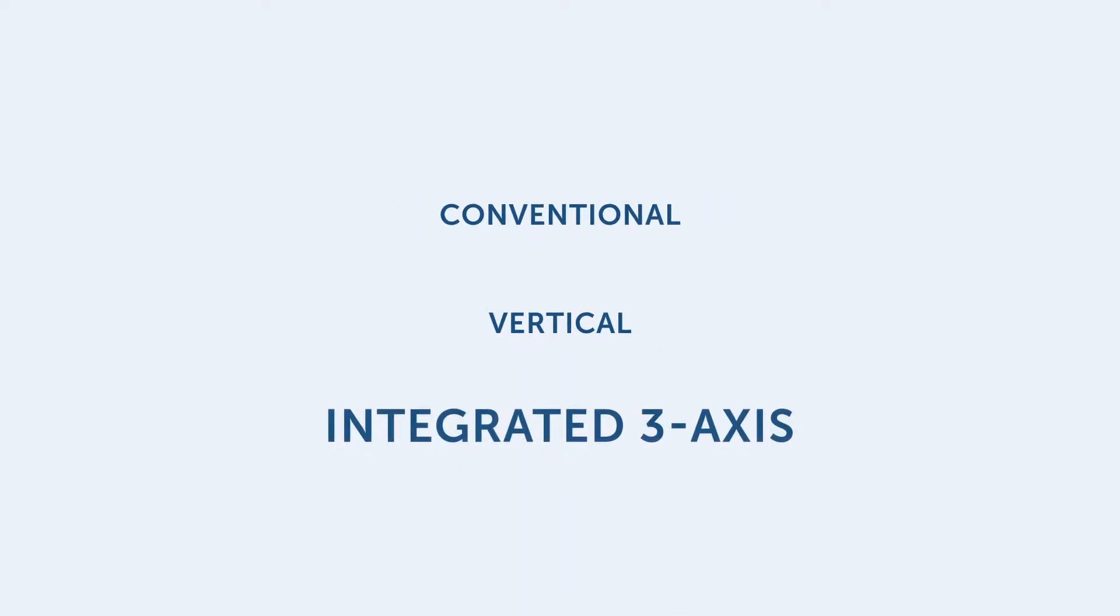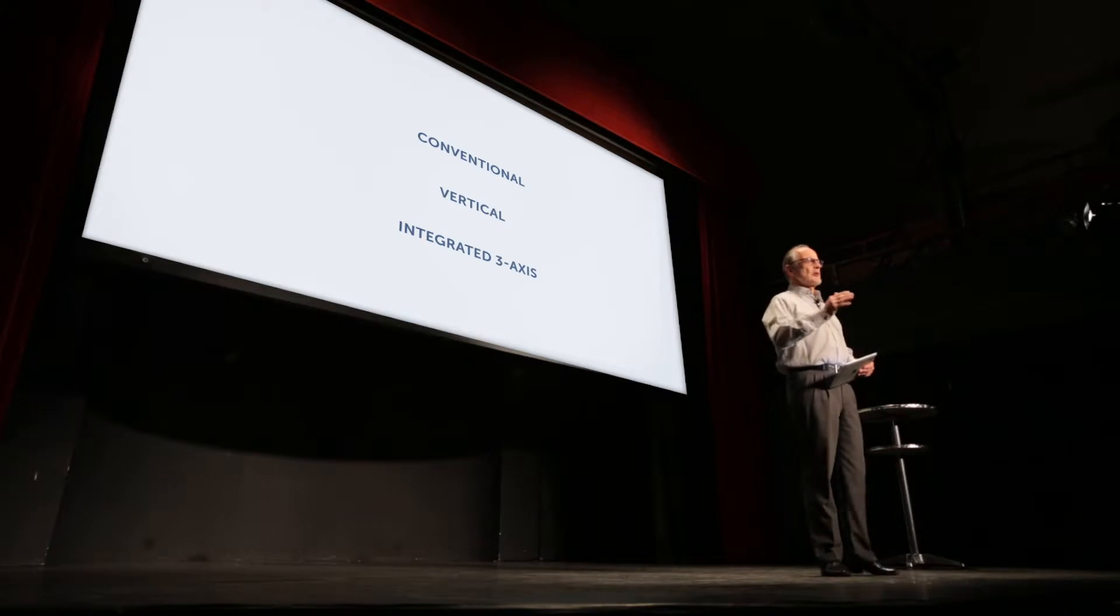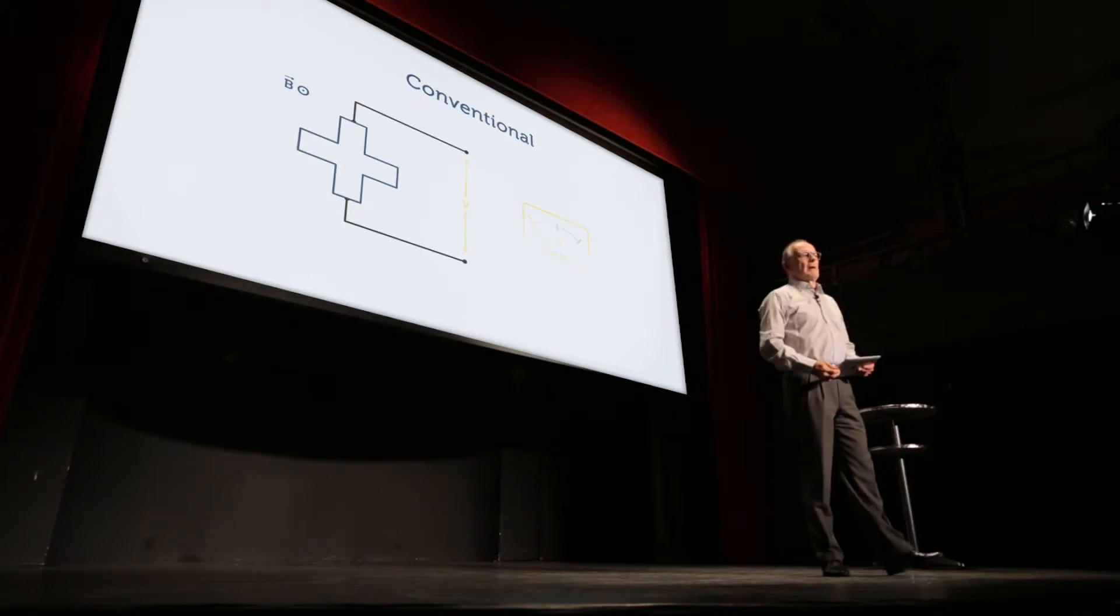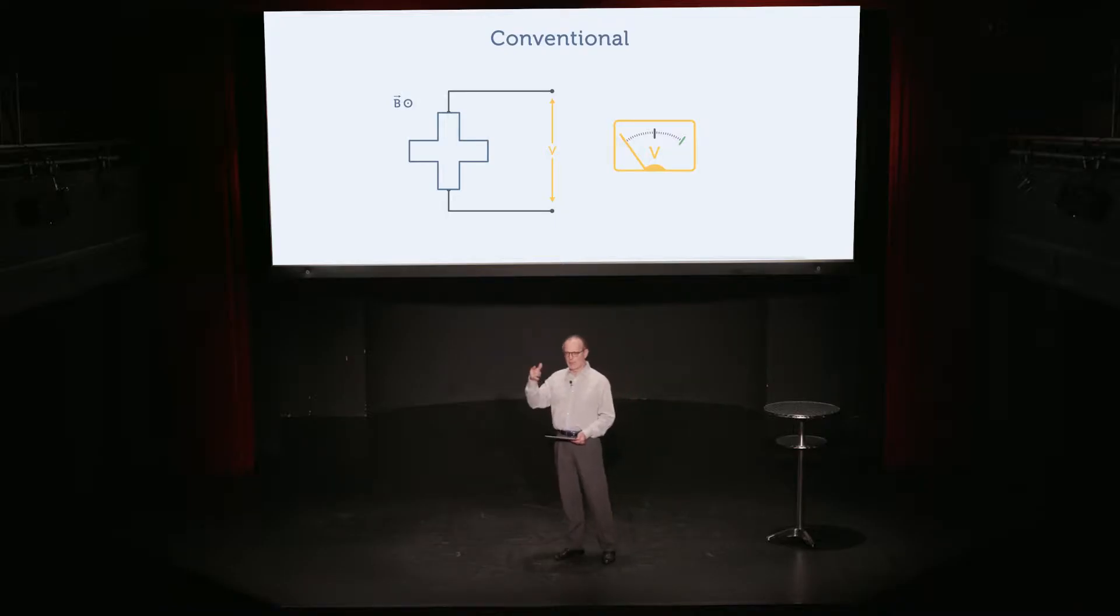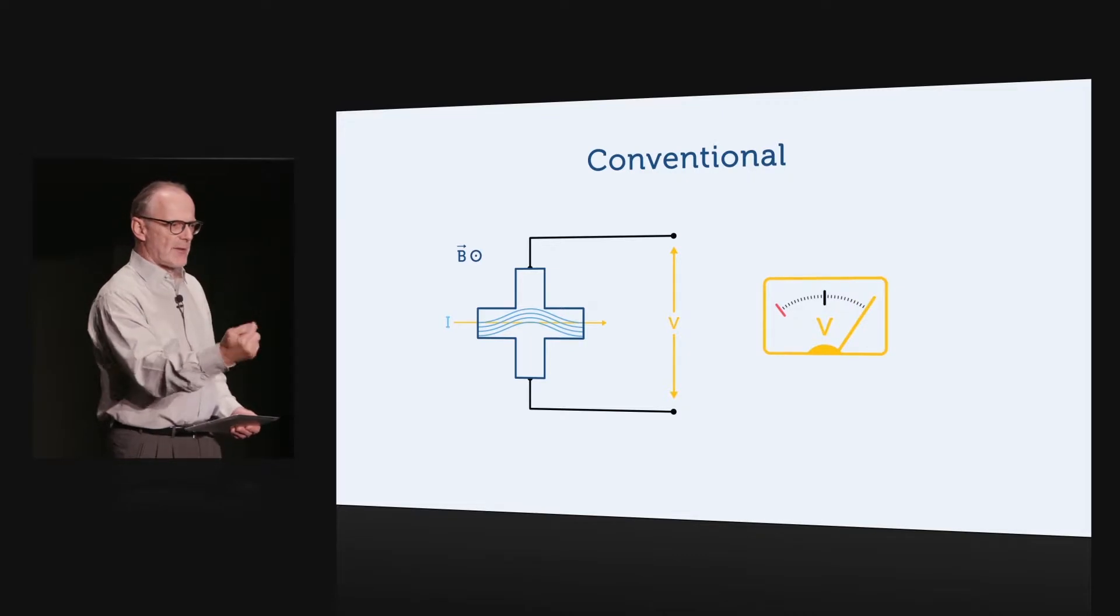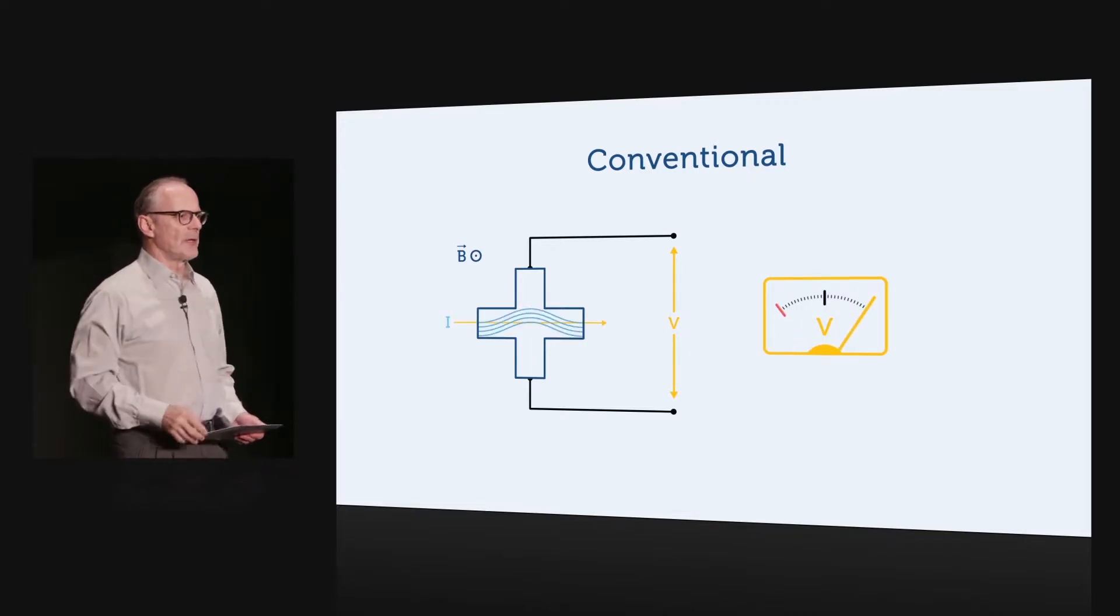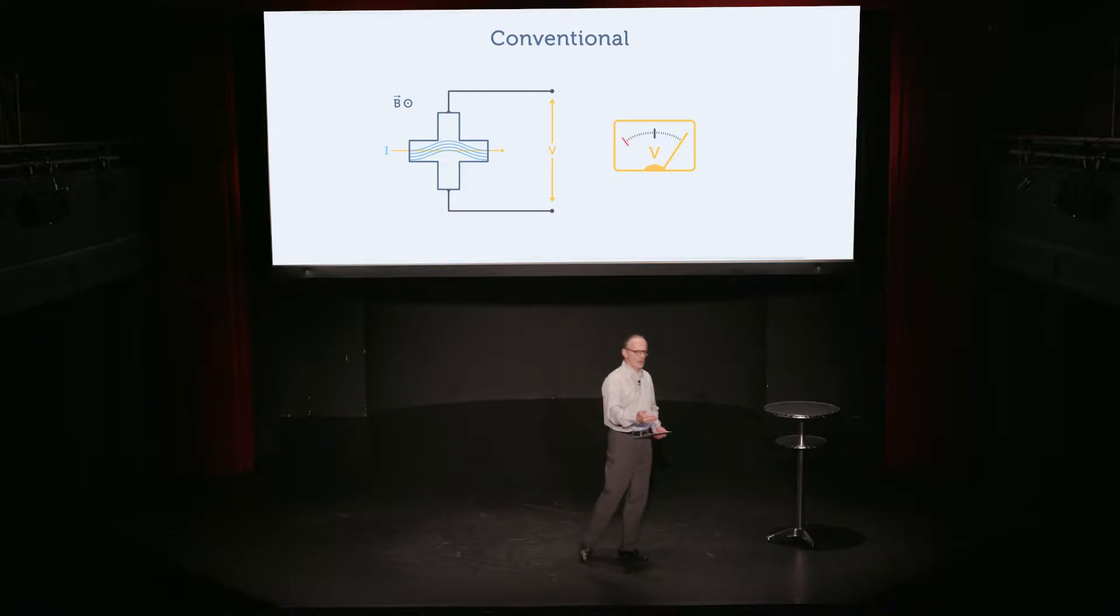Modern Hall sensors are built out of semiconductors, and three geometries are commonly used. The traditional planar Hall geometry is a four-terminal device. The current flows across two terminals, and the other two terminals are used to measure a voltage. It measures a magnetic field that is normal to the plane of the cross. The voltage output is roughly proportional to the flux density, and the sign of the voltage indicates the direction of the field.